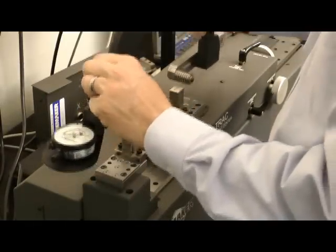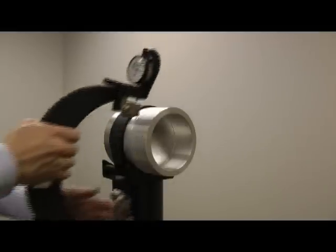First, set your functional roll gauge to the appropriate setting value. Then place the thread roll onto the connector.